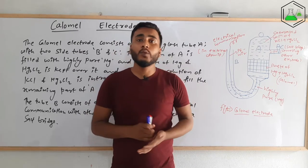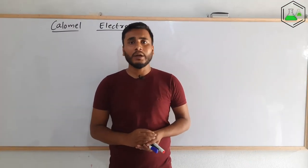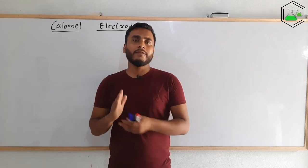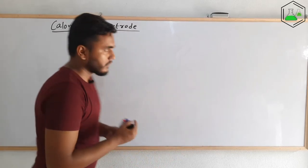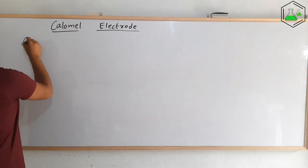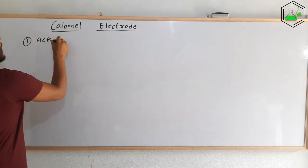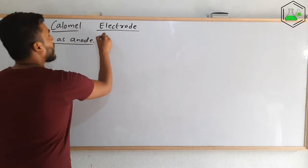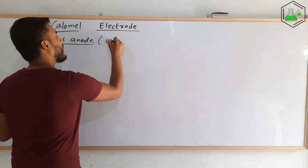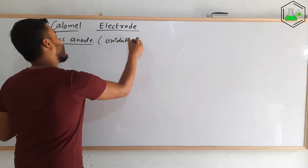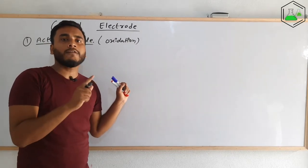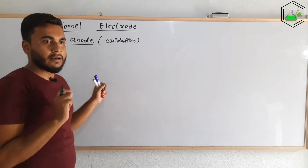Now let's see the theory and working of the calomel electrode. There are two possibilities: the calomel electrode will either act as an anode or act as a cathode. Let's see what type of reaction occurs in each case. When the calomel electrode acts as the anode — anode means negative terminal where oxidation reaction happens — the reaction occurring at the anode is the oxidation half-reaction in the case of a galvanic or voltaic cell.